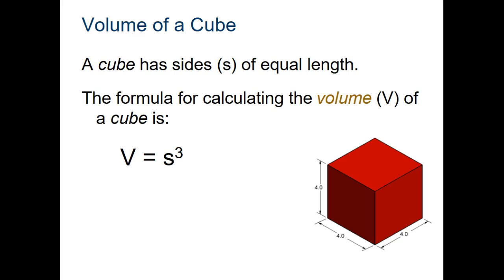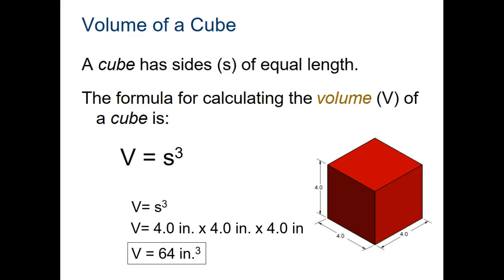This is the easiest calculation. The volume of a cube is equal to the length of a side cubed. So in this instance, we have a cube with four inches on each side. So the volume is going to give you 64 cubic inches, which is four times four times four, or four raised to the third power. Either way will get you the same answer.